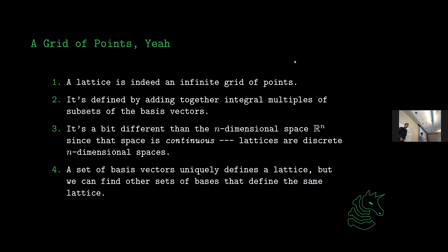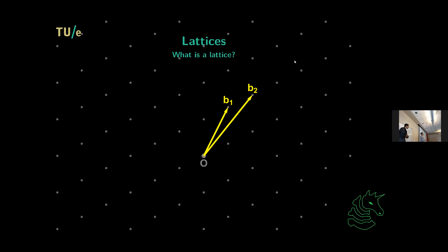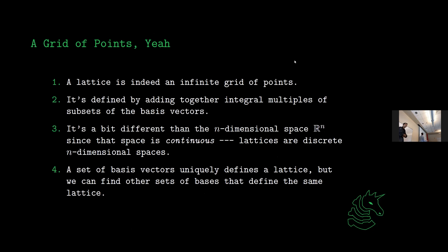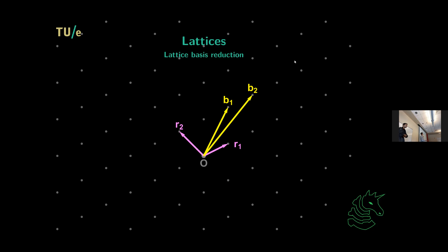A lattice is a set of integer points defined by taking integer multiples together. We're going to deal with two dimensions, but you can extend this idea to ten dimensions. These two vectors define a basis because they're not the same vector — they define a basis meaning we can make essentially every single point we see here out of just these two vectors. One cool thing is that there are infinitely many bases.